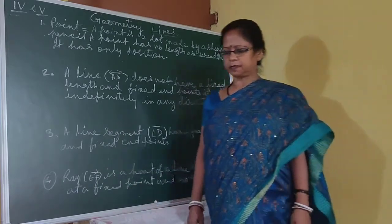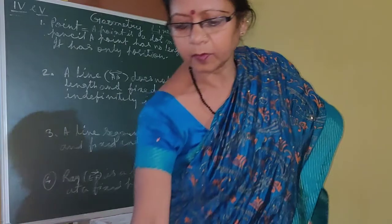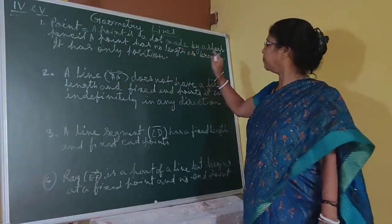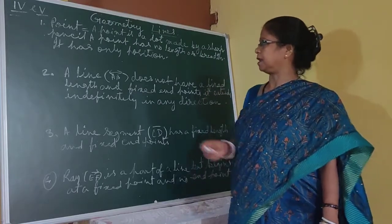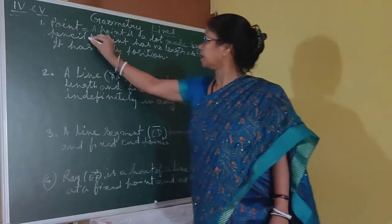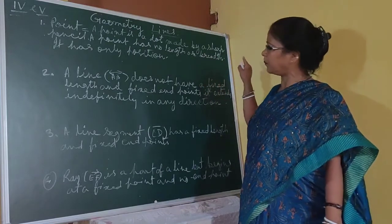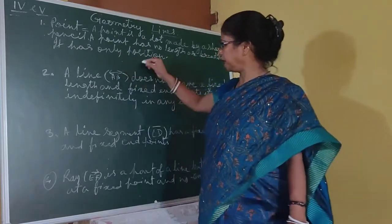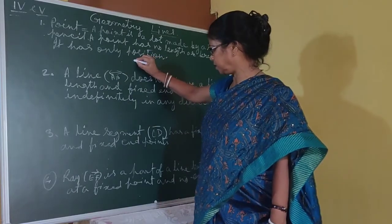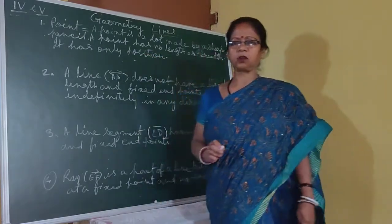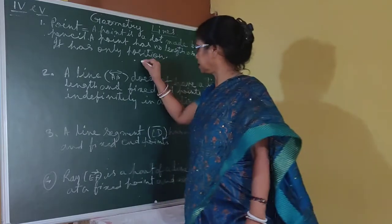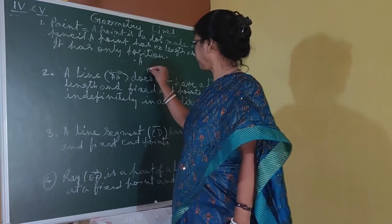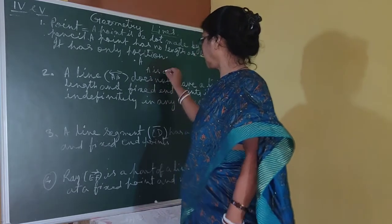So, what is a point? A point is a dot made by a sharp pencil. A point has no length and no breadth — it has only position. That means one dot made by a sharp pencil is called a point. Suppose the name is A, then A is a point.